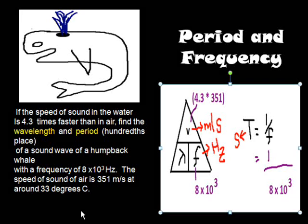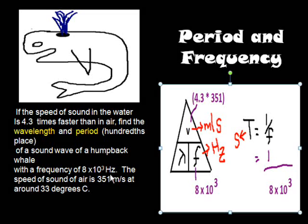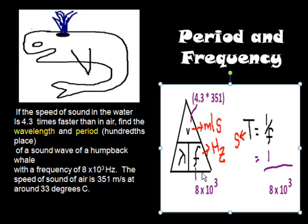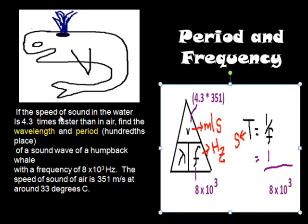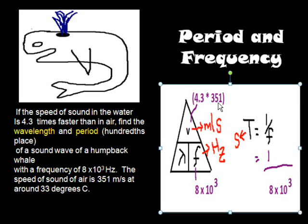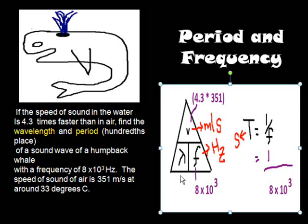Alright, so let's start to solve the problem here. We scan through the problem and try to match up the units with the symbols in the equation. We have Hertz, so 8 × 10³ would go in this corner of our math triangle. Then we've got to be careful—351 is the speed in air, but we're talking about the speed in water, so we need to multiply that by 4.3 times the 351. What I like about the math triangle is it's easy to see the arithmetic or the algebra to solve the problem.